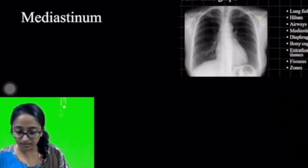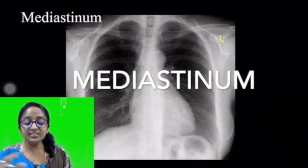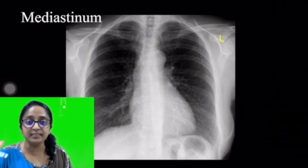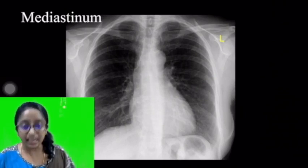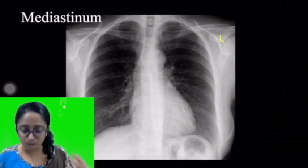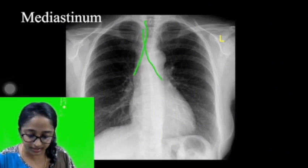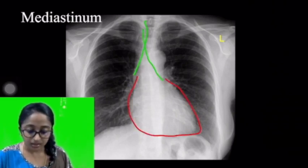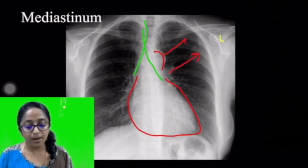So far we have covered the lung fields, the hilum, and the airways. Now moving to the mediastinum. The radiodense white structure you see in the center of the radiograph is the mediastinum. It encompasses the major airways — the trachea and bronchi — and also the heart, the great vessels including the aorta and the pulmonary artery.